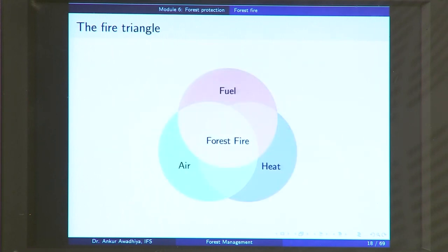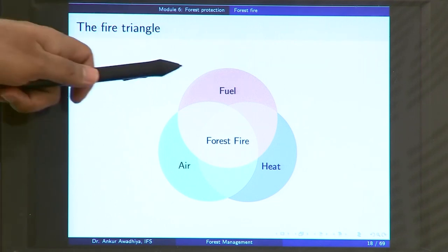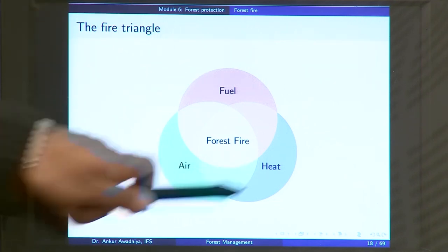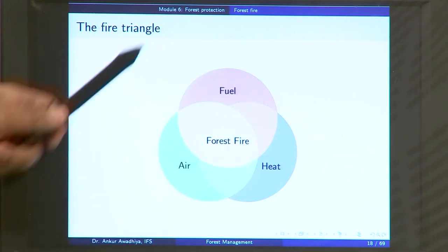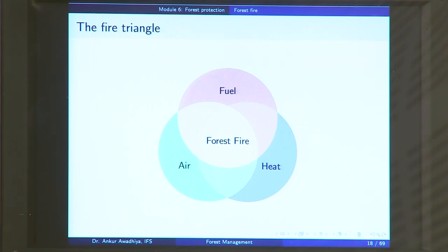A fire happens when you have a combination of three things — this is the fire triangle: fuel, air, and heat. If these three combine together you will have a forest fire. If there is no fuel, no fire; if you cut the air supply, no fire; if you reduce the temperature, no fire. Only when all three come together do you get a forest fire, and this generally happens in the summer seasons.